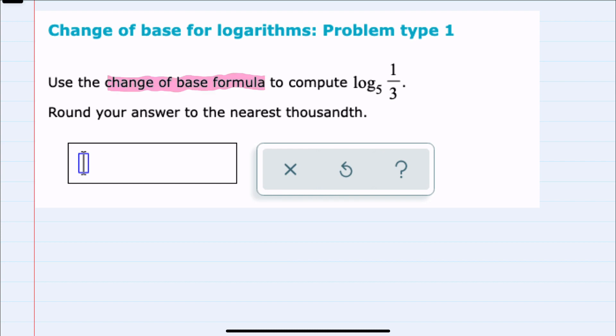We are using the change of base formula to compute log base 5 of one-third. I'll start by stating that the change of base formula says that if we have some log base a of b, we can change the base to another log base, such as a common log which is base 10, of what we were taking the log of (b) divided by the log with that new base (again base 10 here) of the old base which was a.